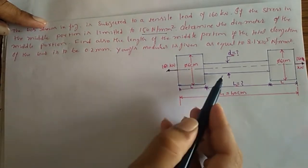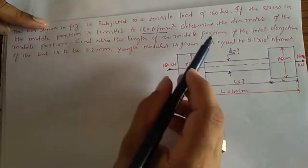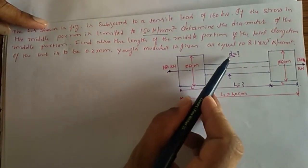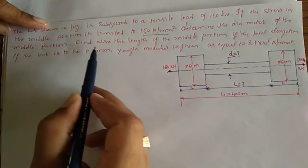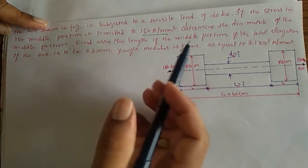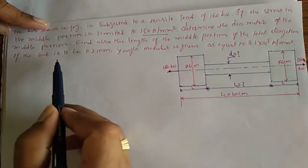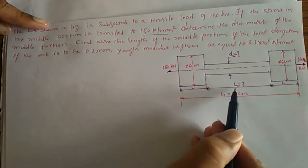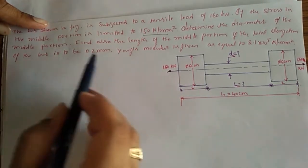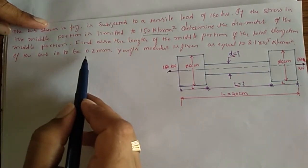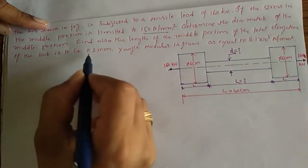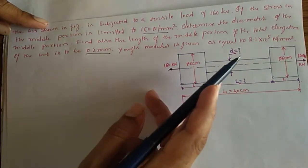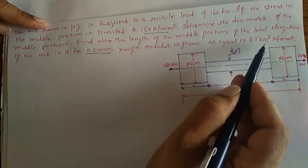...the given stress in the middle portion of the bar. We need to determine the diameter of the middle portion, that is D2. We also need to find the length of the middle portion, L2, if the total elongation of the bar is to be 0.2 mm. Young's modulus is given as 2.1 × 10⁵ Newton per mm square.